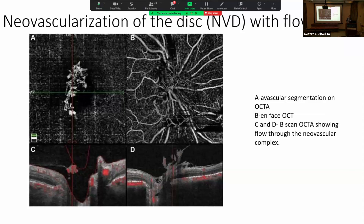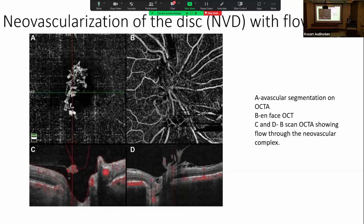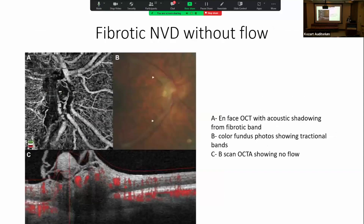Number two is looking at retinal neovascularization. Often when looking at PDR patients, we're not sure if the NV we're seeing is active or inactive. OCTA can quite nicely evaluate flow and provide that information. For example, here you see a patient with neovascularization of the disc that is active, compared to neovascularization of the disc that is inactive — these are just fibrotic strands across the arcades that clearly do not have flow, as shown in the bottom left picture.